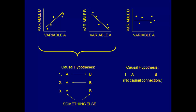Now if the line is flat like this, then there is no clear pattern in the data — no association between variable A and variable B — and so we hypothesize none of these causal relationships. That's what we've done already. Now I want to switch from using variable A and variable B to using exposure and disease.